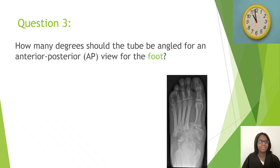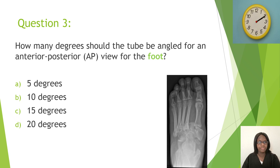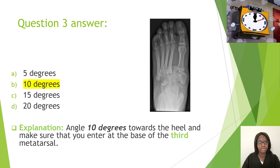Question three: How many degrees should the tube be angled for an anteroposterior view of the foot? A, five degrees; B, 10 degrees; C, 15 degrees; D, 20 degrees. The correct answer is B, 10 degrees. You want to angle your tube 10 degrees towards the heel and make sure that you enter at the base of the third metatarsal.